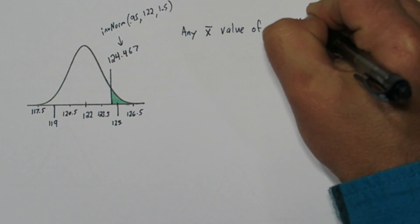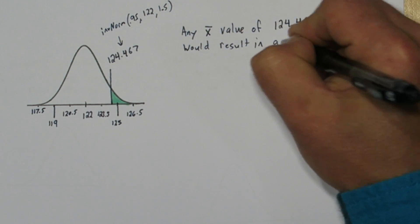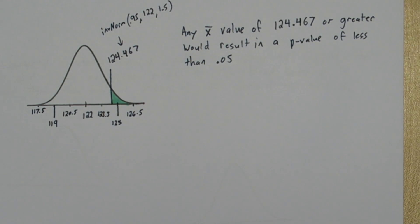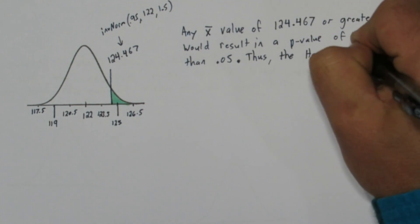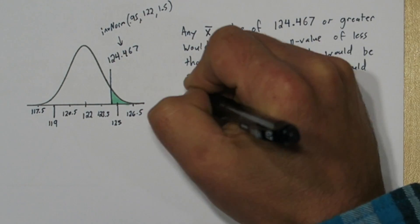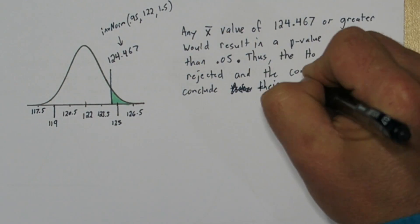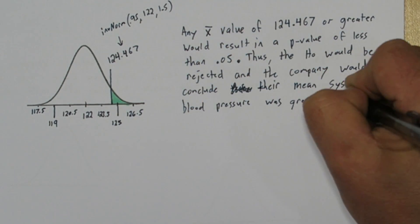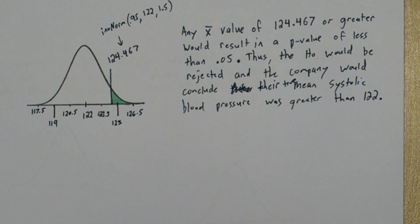Now this tells us the value of 124.467, which is about here, cuts off the upper 5%. So we'll say any sample mean value of 124.467 or greater would result in a p-value of less than 0.05, thus the null would be rejected and the company would conclude that their true mean systolic blood pressure was greater than 122.